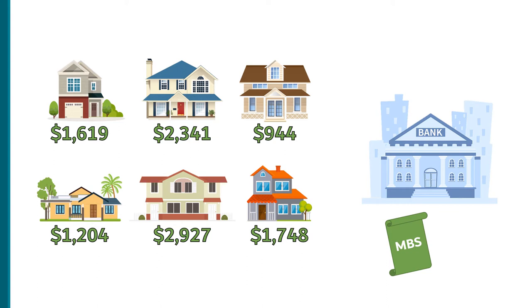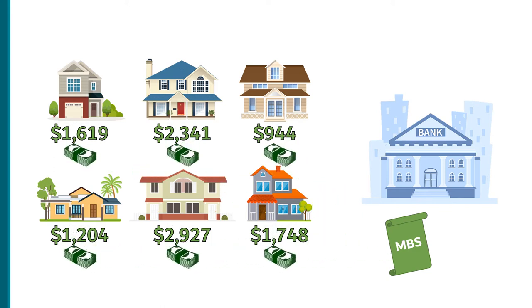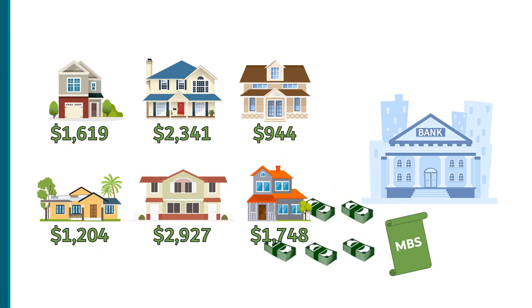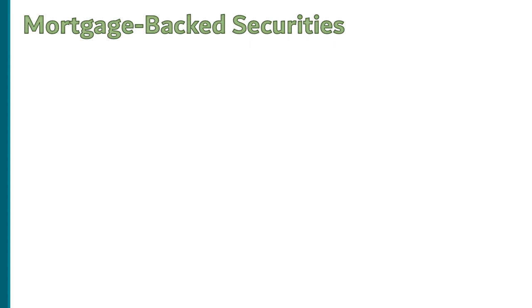The bank gets paid back with a little interest early — say $2.5 million — and now the holder of the mortgage-backed security is the one who receives the monthly mortgage payments. Over the life of the security, they will earn back their money and then some. Bundling mortgages together like this is a great way to reduce the risk of mortgage lending.